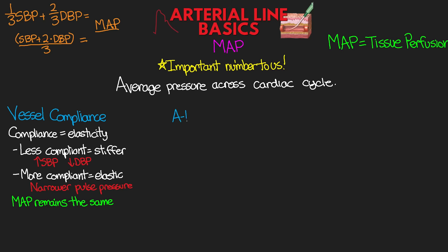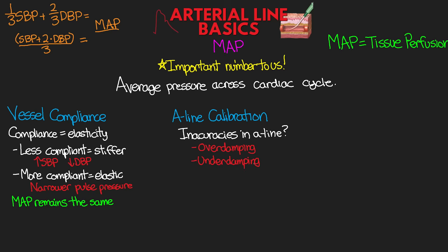Another thing is our A-line calibration. In the next lesson I will talk more about this, but if we have inaccuracies in our A-line, such as over-damping or under-damping, we end up with falsely high or low systolic or diastolic blood pressure readings. But again, our MAP is going to remain relatively the same — another reason that we want to focus on this value.